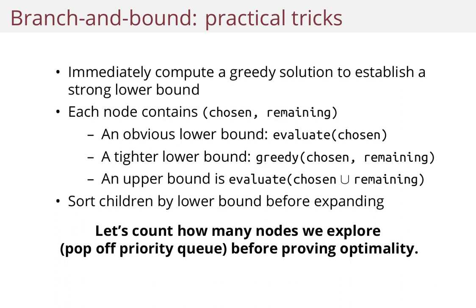So let's count how many nodes we explore — where my definition of explore is pop off the priority queue before proving optimality — on the real problem where you have to choose six out of 151 Pokemon.